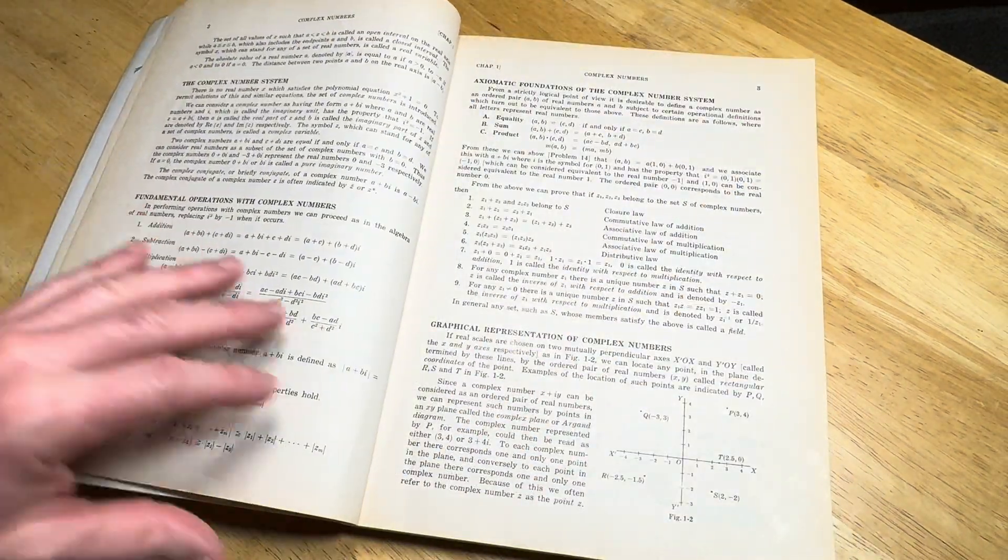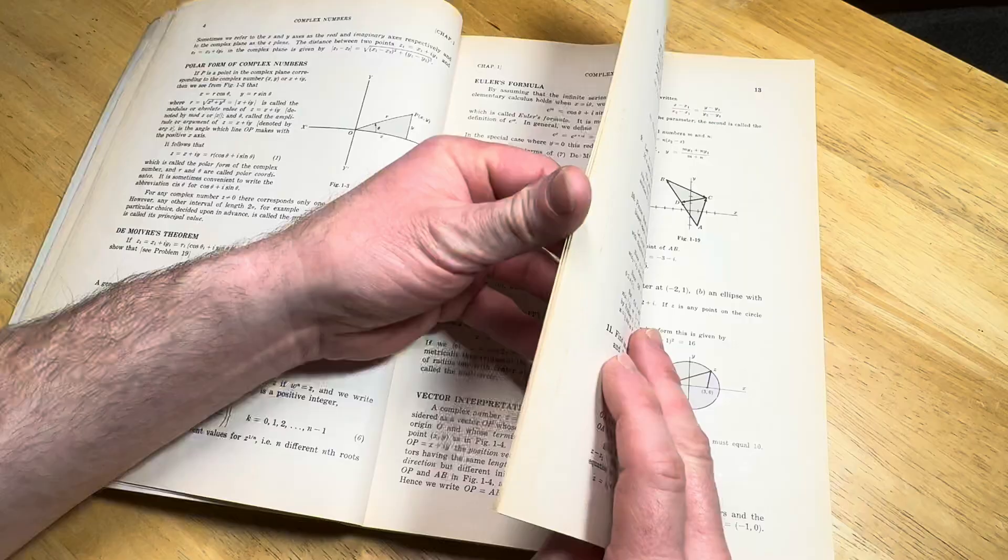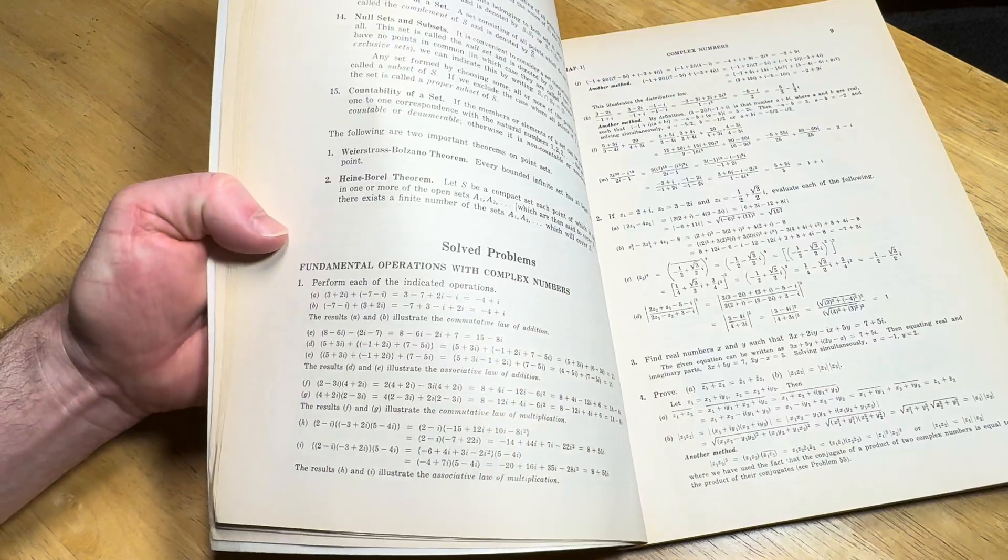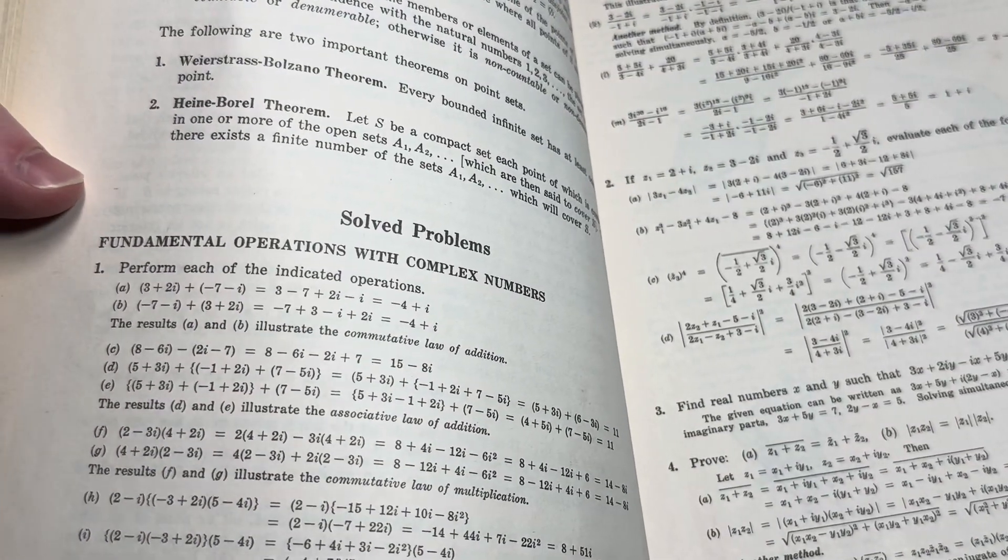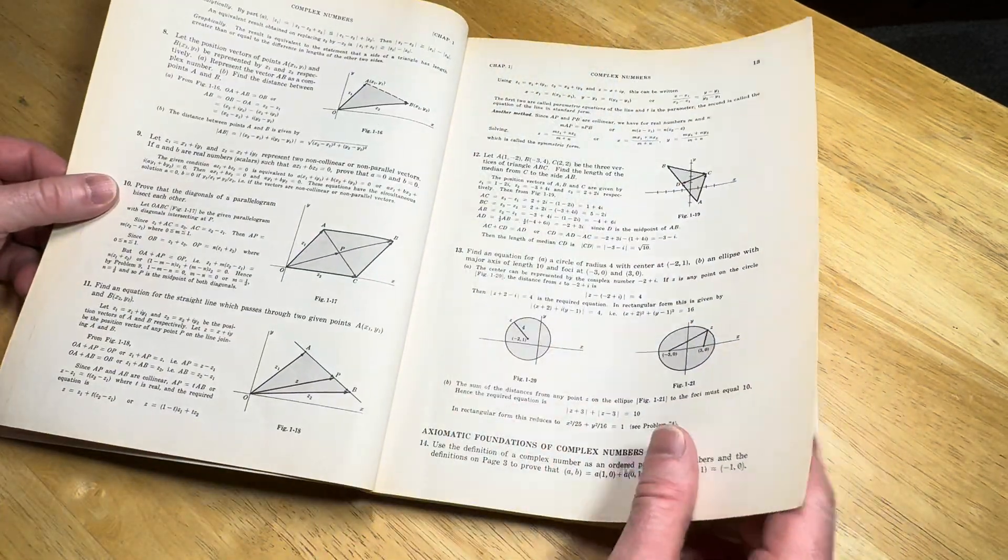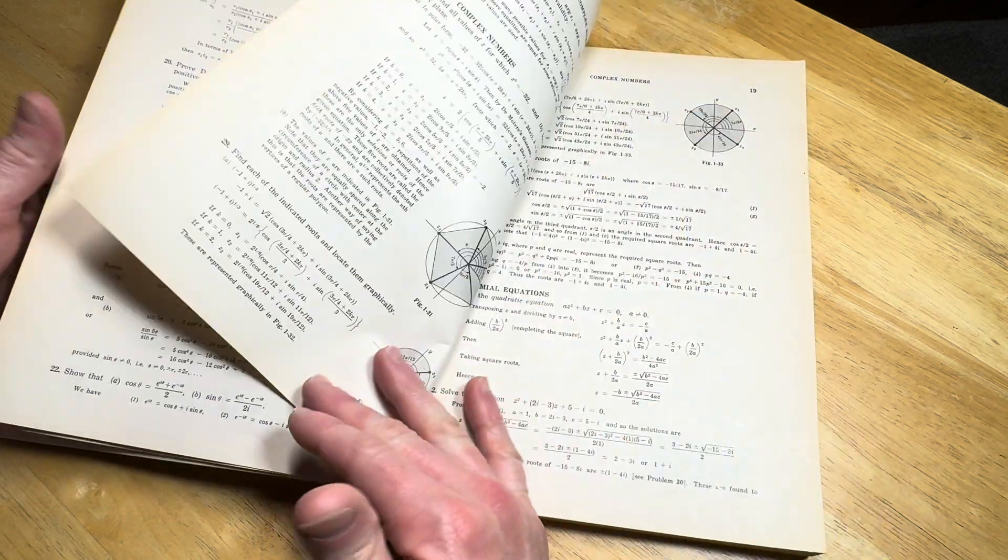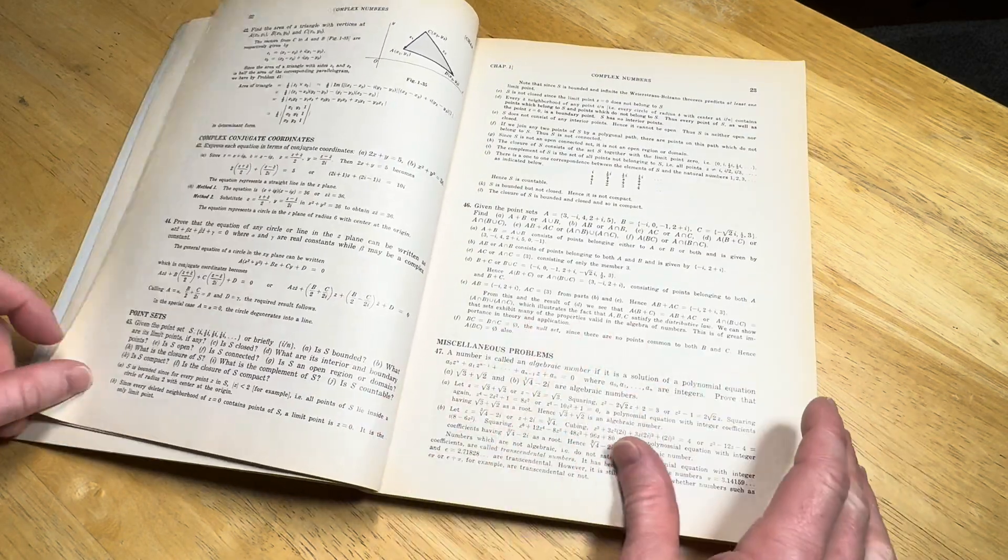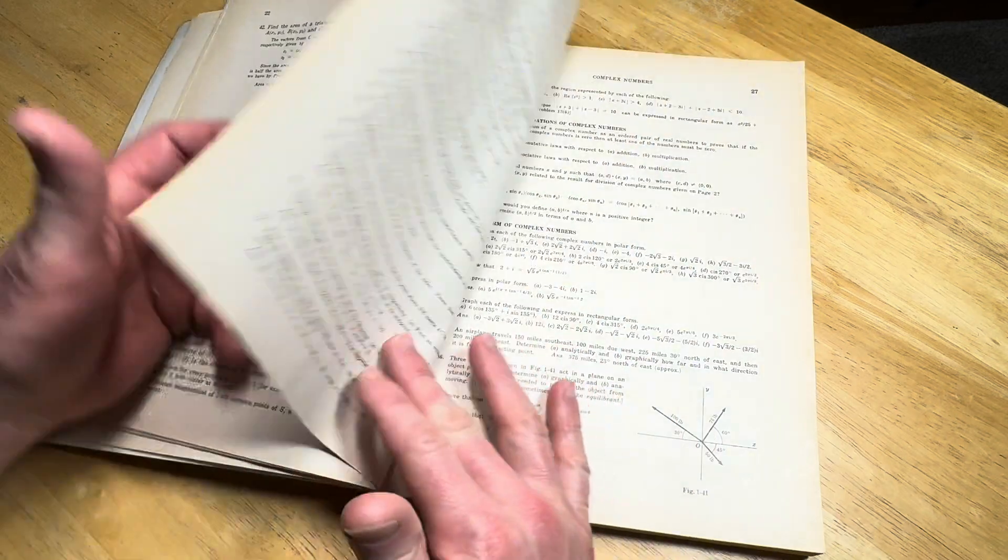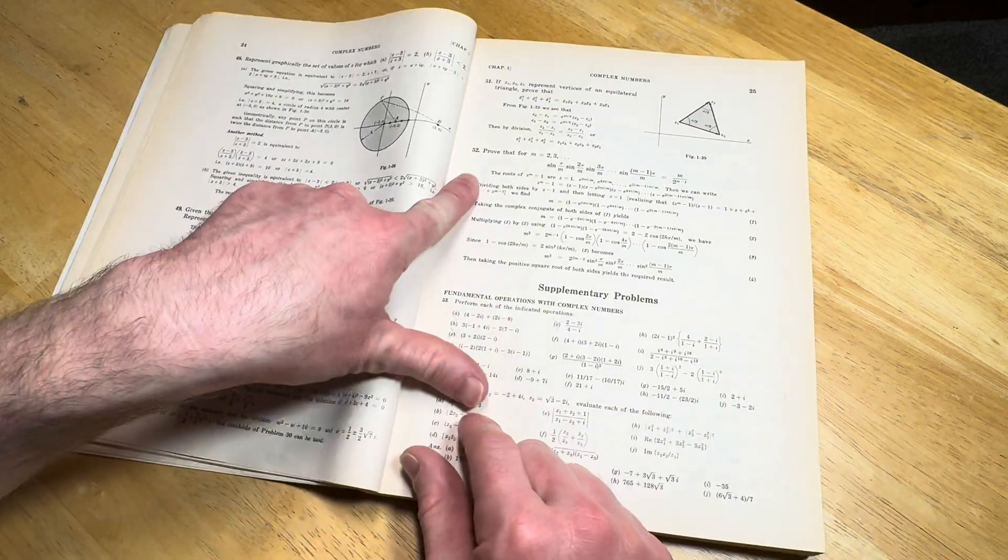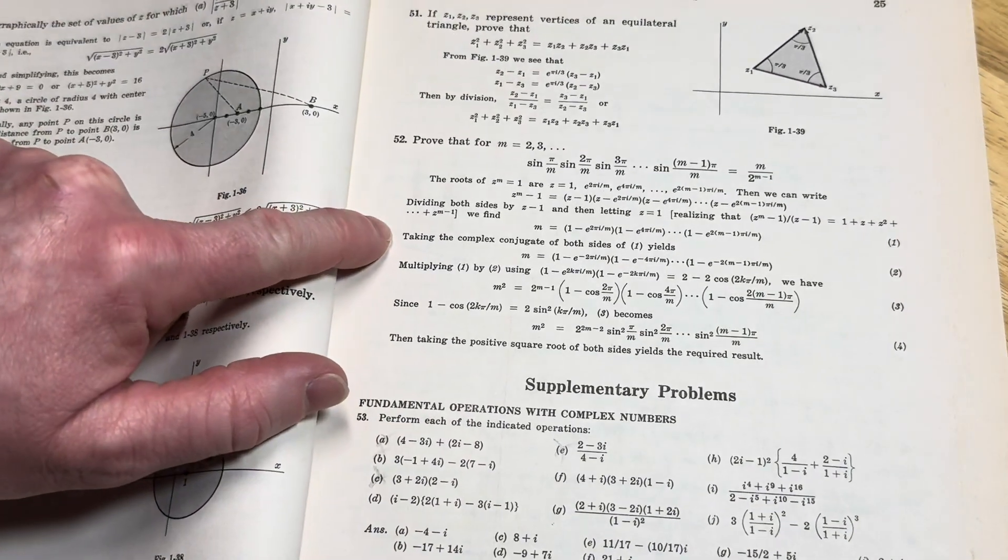The way this book works is you have some content, it teaches you information, just keeps going with more and more information. Then you have solved problems. This is really key because you have actual full solutions to these problems. It gives you tons of solved problems. In the first chapter, you get 52 solved problems.